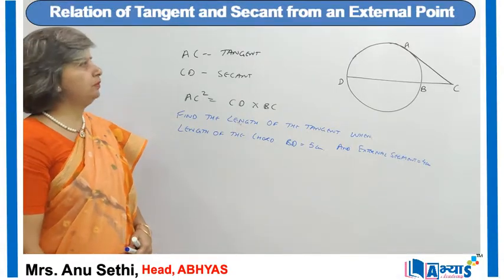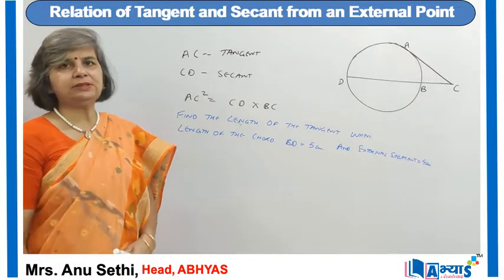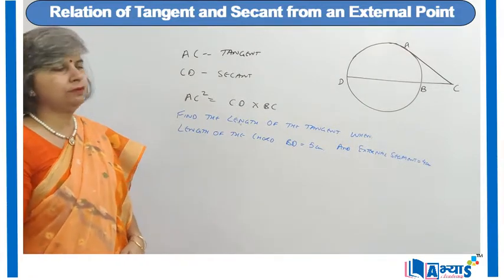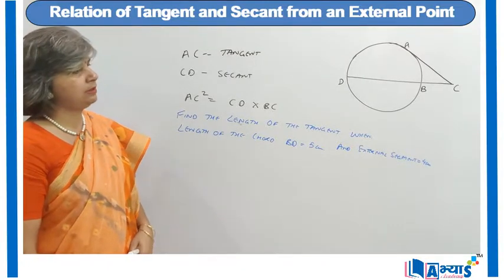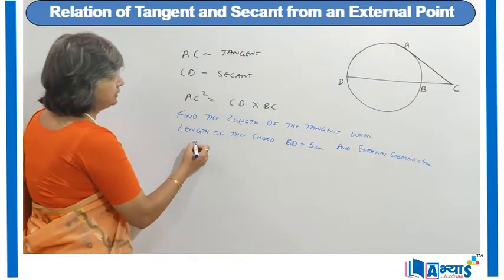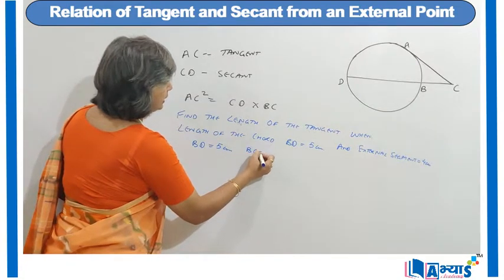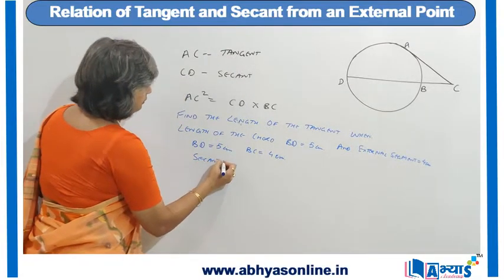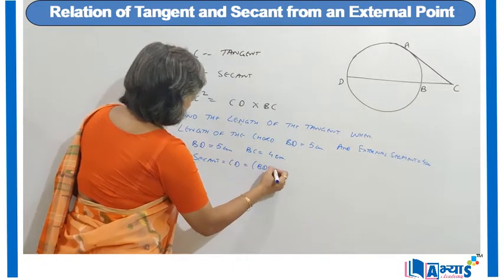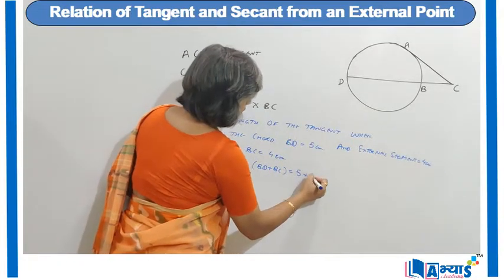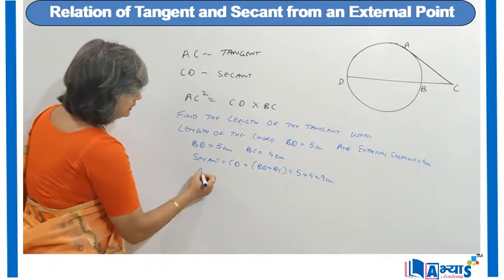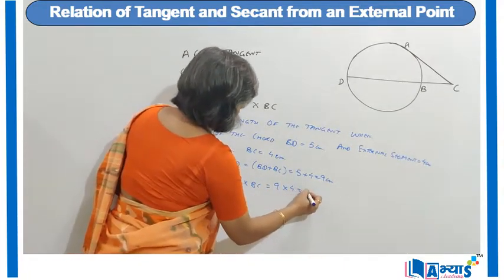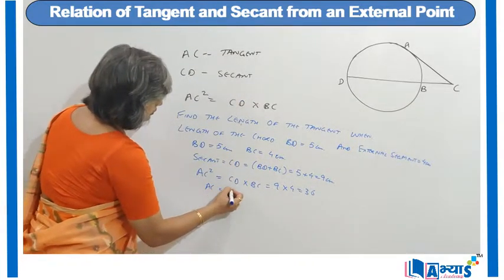Let us apply the concept of the relation between the tangent and the secant. The relation is AC square is equal to CD into BC. We are given a question to find the length of the tangent when the length BD is 5 centimetre and the external segment BC is 4 centimetre. So the secant CD will be equal to BD plus BC, that is 5 plus 4, which is 9 centimetre. And AC square is equal to 9 into 4, that is 36, so AC is equal to 6 centimetre.